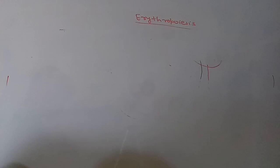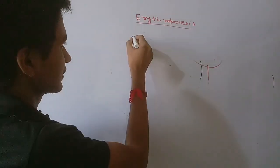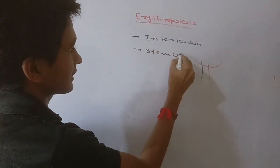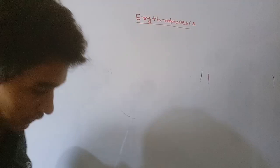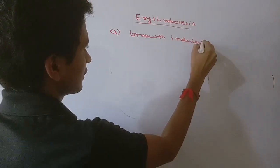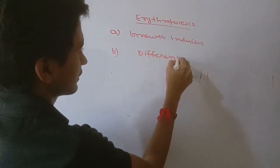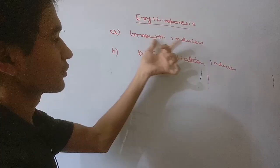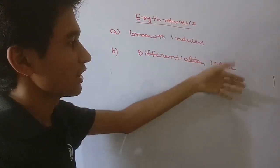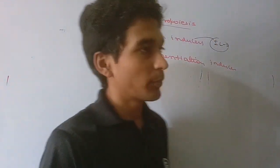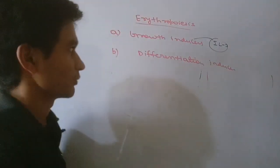Other factors also regulate RBC formation, such as interleukins and stem cell factors. For erythropoiesis, two types of factors are important: growth inducers, which cause growth of the cell, and differentiation inducers, which cause differentiation of the cell. Interleukin-3 is an example of a growth inducer.